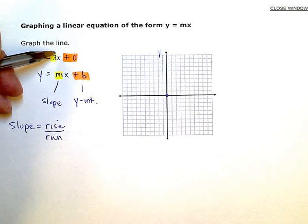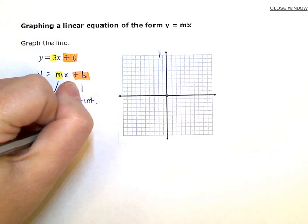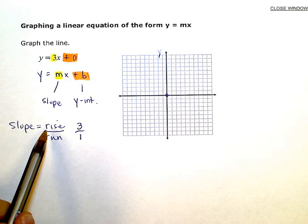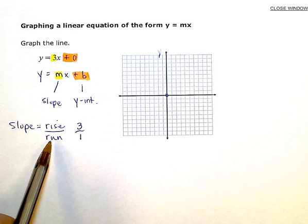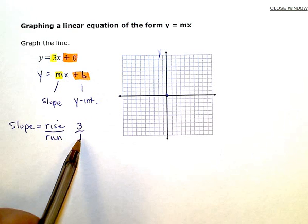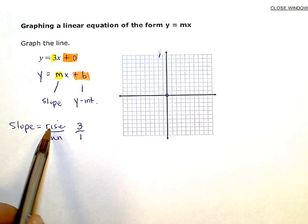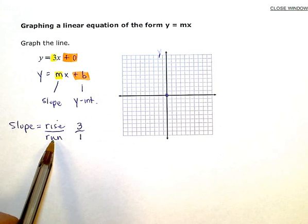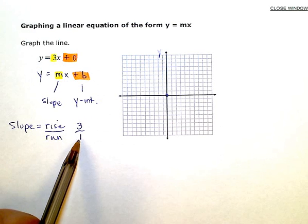But if I wanted to write this as a fraction, I would write it as 3 over 1. So my rise is 3. My run is 1. Or my change in the y-direction is positive 3 or up 3. My change in the x-direction is positive 1 or to the right 1.